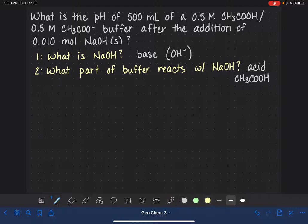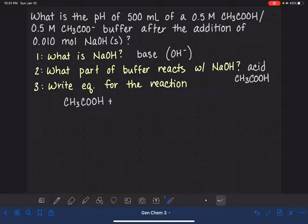So once you have figured out what's going to be reacting with the NaOH, now we need to write a balanced equation for that reaction. The reaction is going to be between the buffer's acid, CH3COOH, and the NaOH. Really specifically, it's just the OH- that's doing the reacting here. So we could make things a little bit easier for us just by writing the OH-.